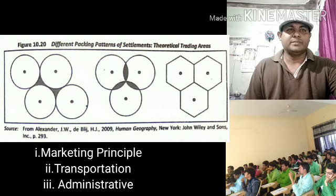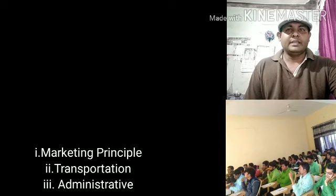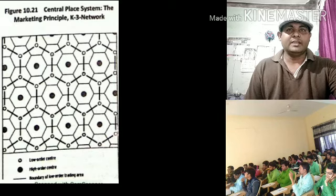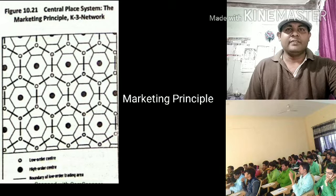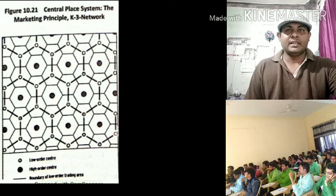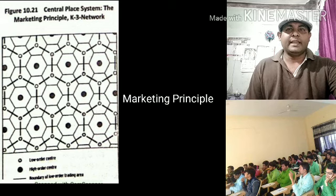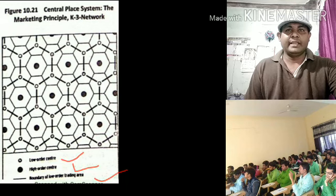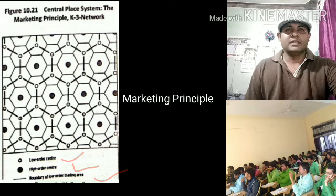For providing goods and services to all people at the same distance, Christaller proposed three principles: the marketing principle, the transportation principle, and the administrative principle. Under the marketing principle, people will always go to their nearest center that provides the required service. Christaller called this K=3, where K represents the number of settlements at a given level in the hierarchy served by the central place of the next highest level.